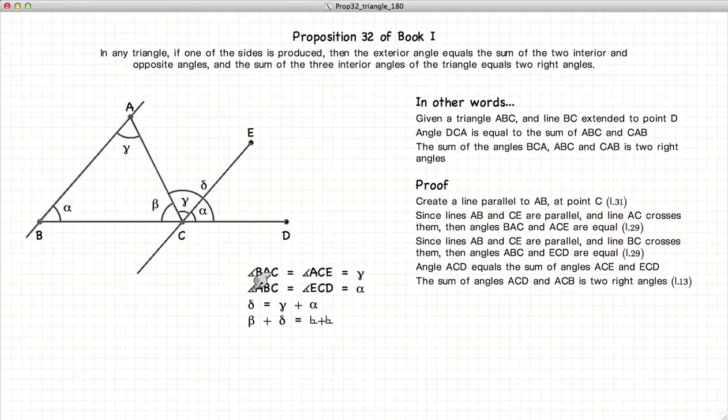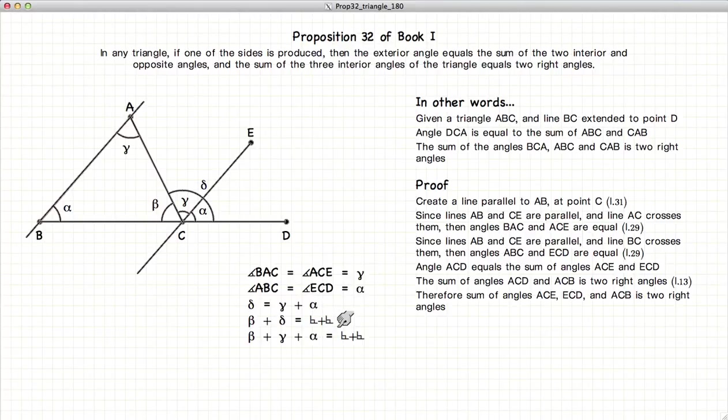So now we have delta is equal to gamma plus alpha, and beta plus delta is equal to two right angles. So we have beta plus gamma plus alpha is equal to two right angles, having substituted this into that part of the equation.